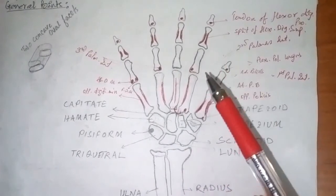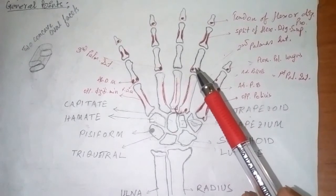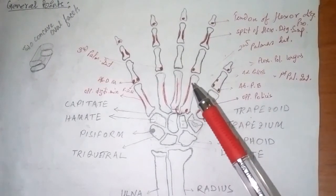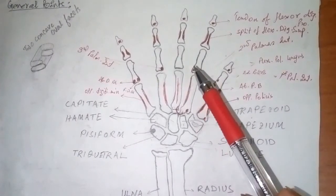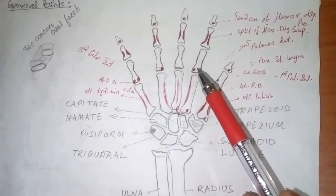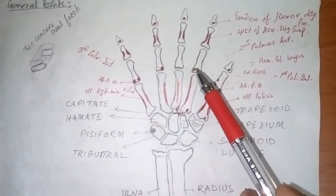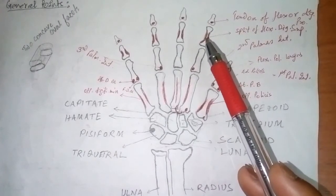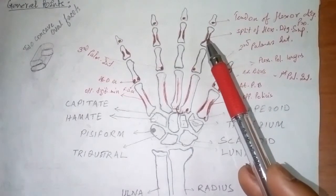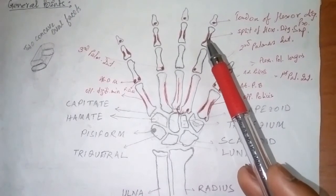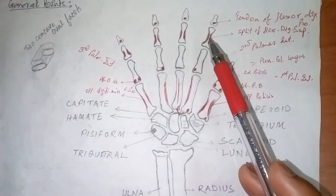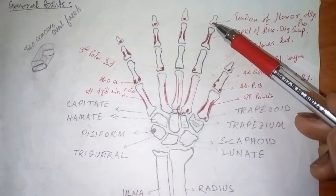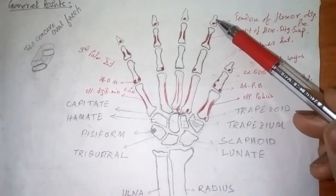Coming to the second digit, there is the insertion of the second palmar interosseous muscle, which originates from the second metacarpal bone, inserted medially on the palmar surface of the base of the proximal phalanx of the second digit. On the middle phalanx there is the insertion of the flexor digitorum superficialis, which divides into two splits — one for the lateral and one for the medial border of the shaft. These two splits are inserted on these two borders. And the flexor digitorum profundus is inserted on the base of the distal phalanx.